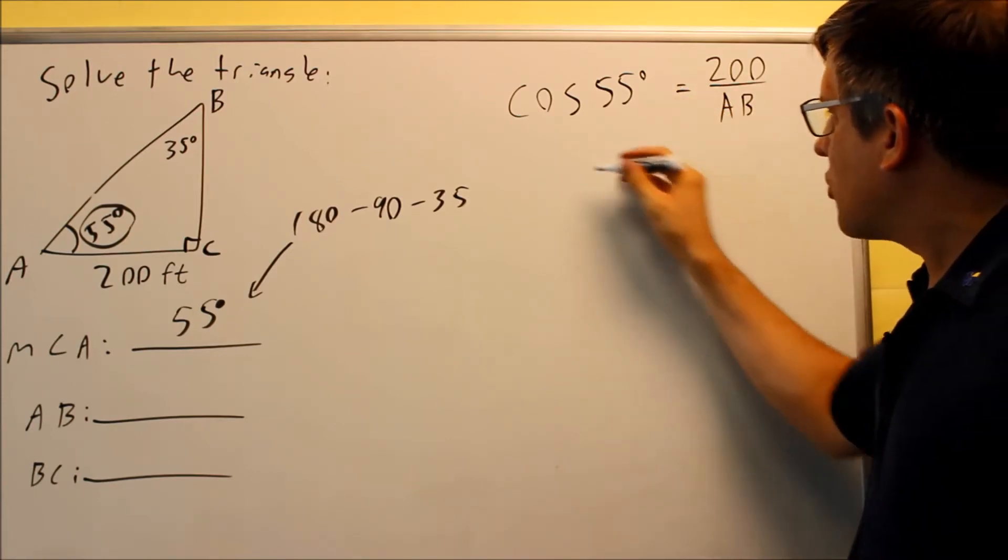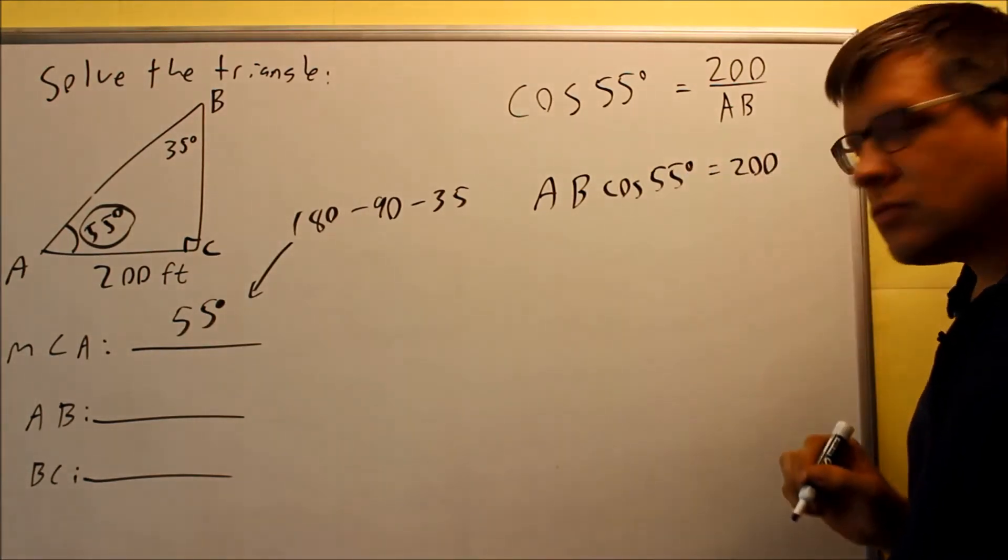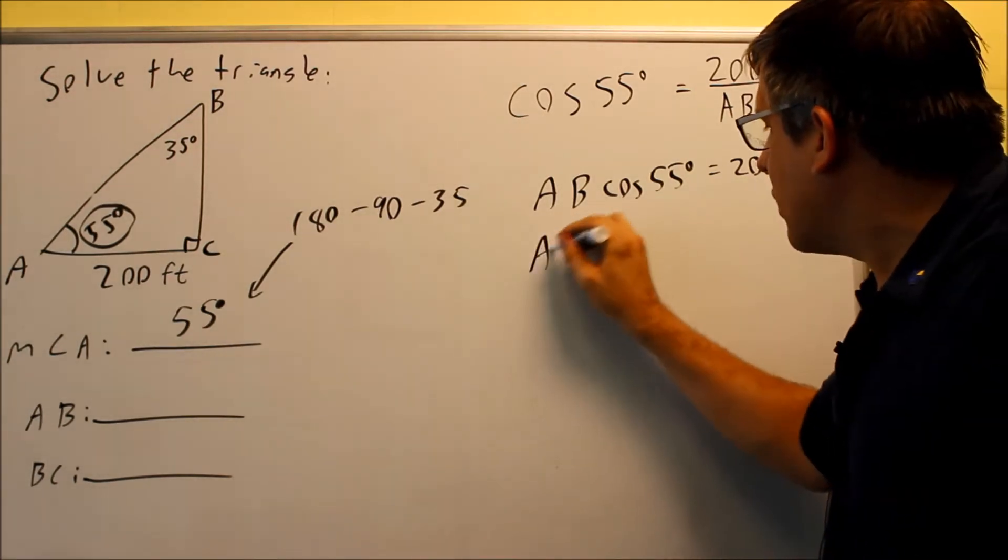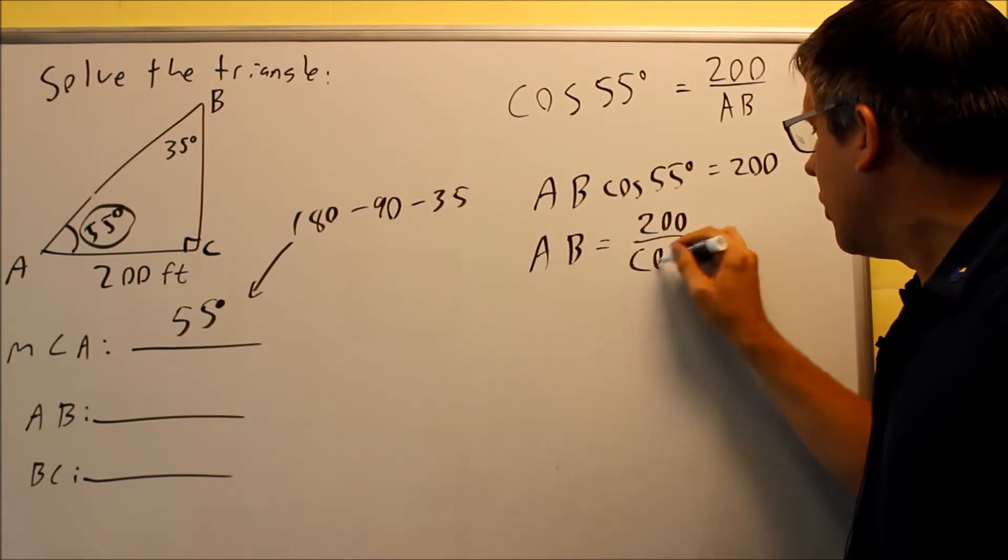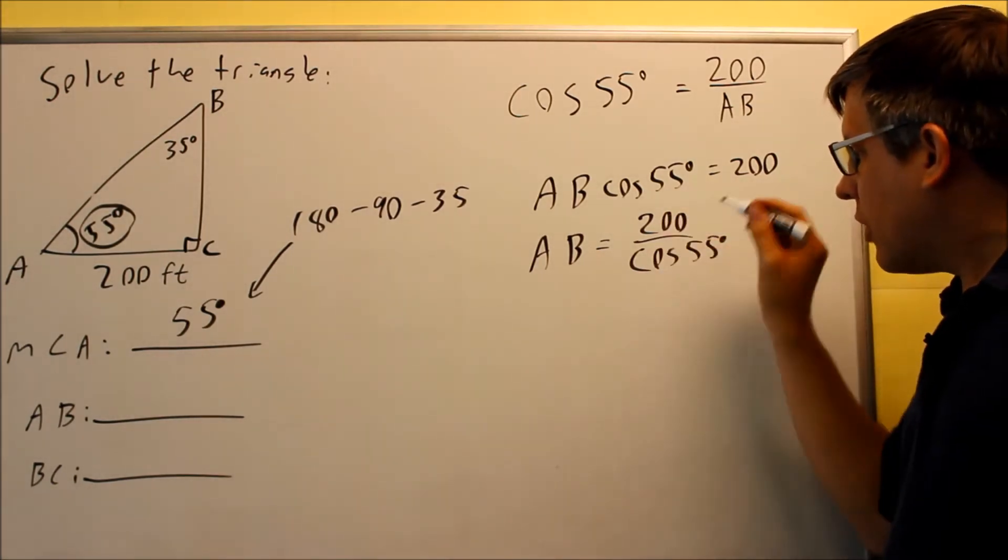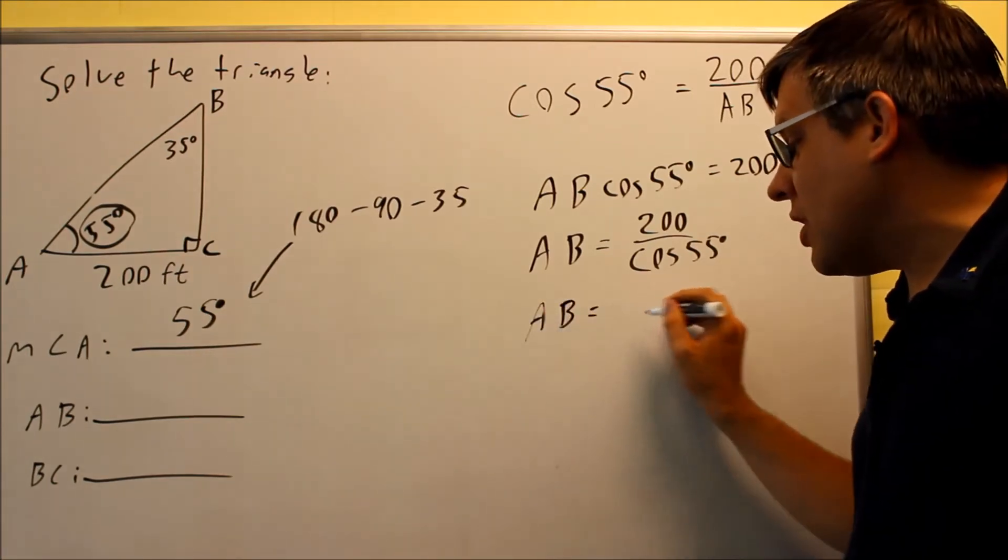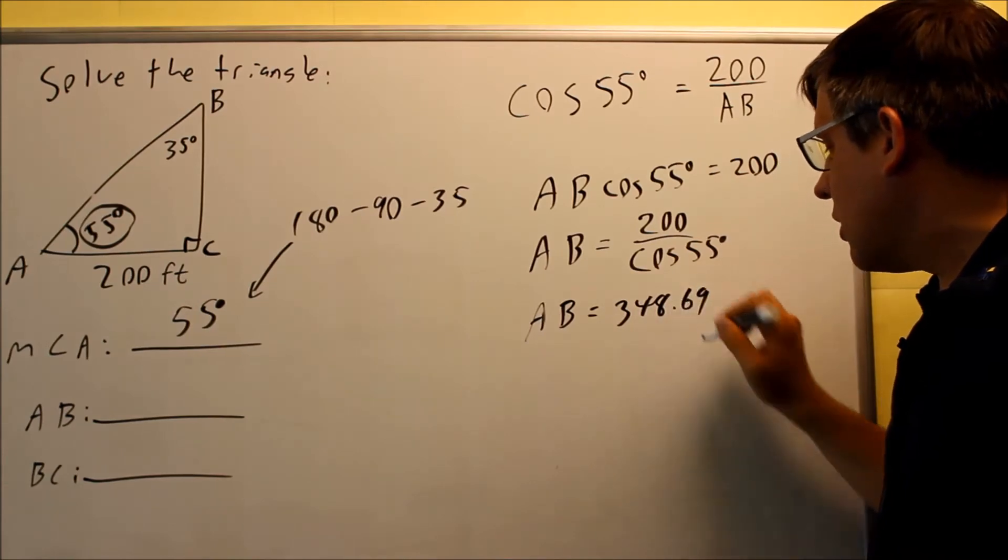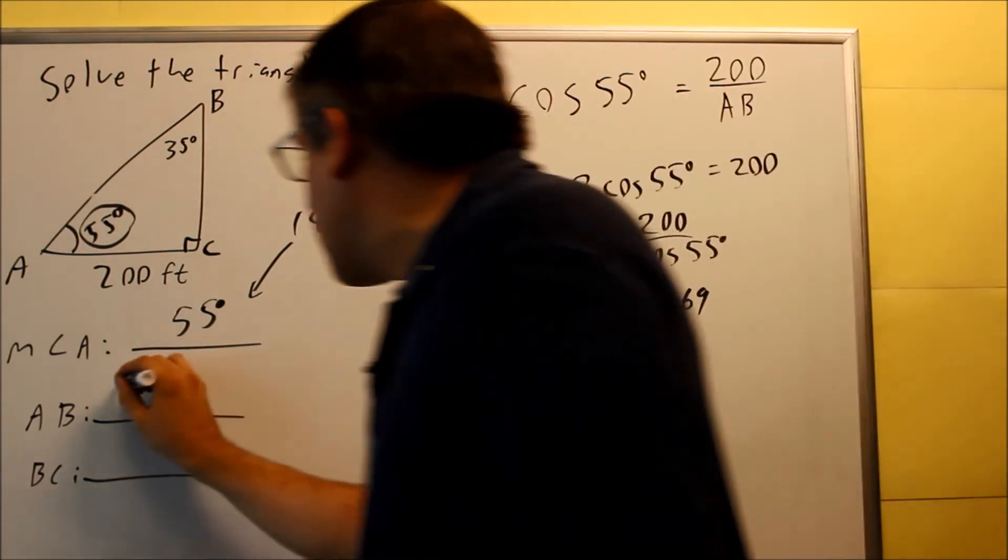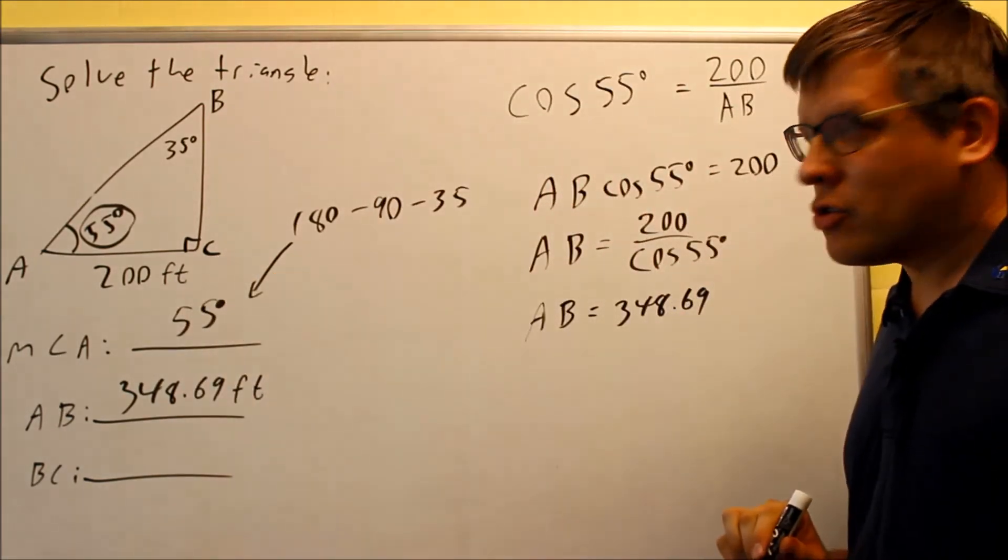We want to solve for AB, so we're going to cross multiply. AB cosine 55 equals 200. We solve for AB by dividing both sides by cosine 55, so AB equals 200 over cosine 55. Make sure your calculator is in degree mode and enter this into your calculator. The answer you should get for AB is 348.69, which would be in terms of feet.